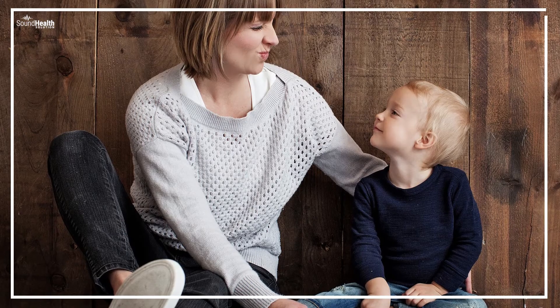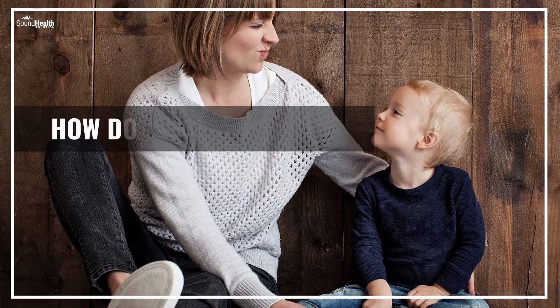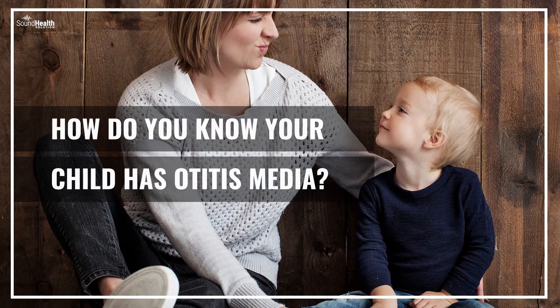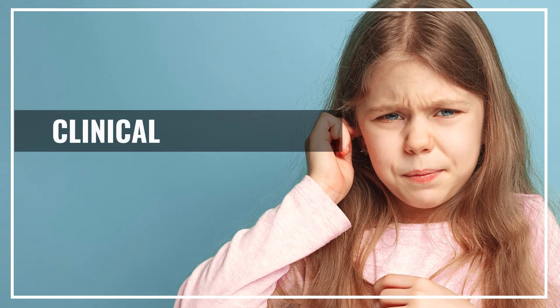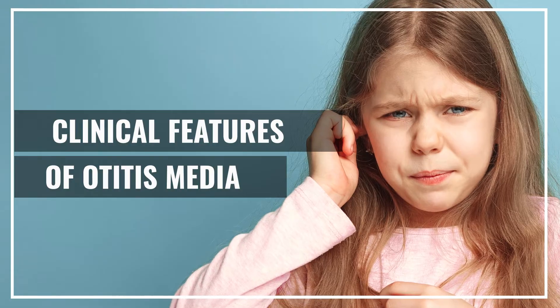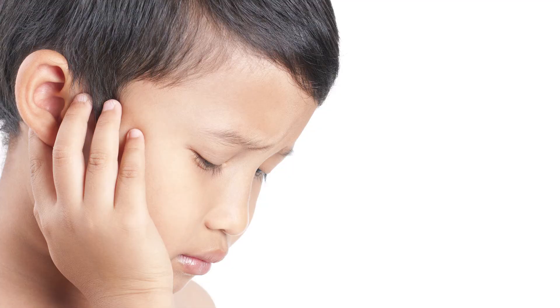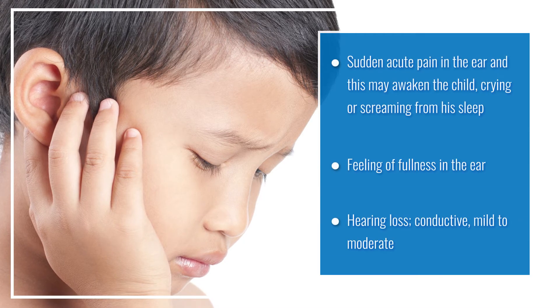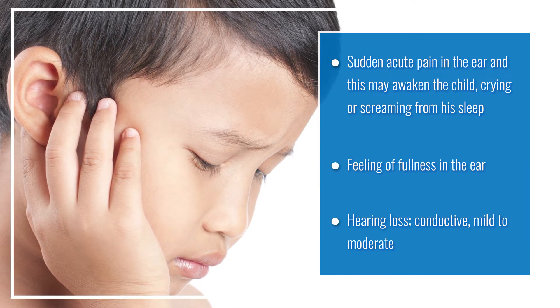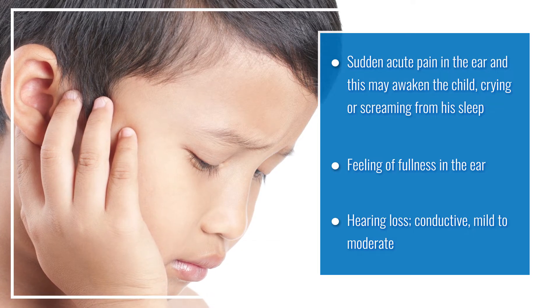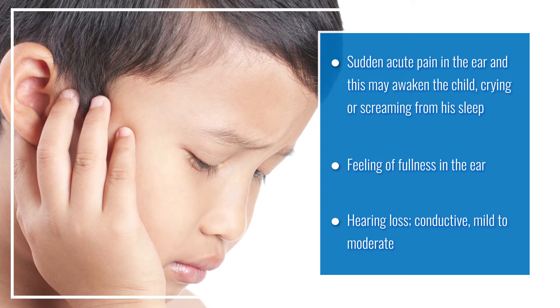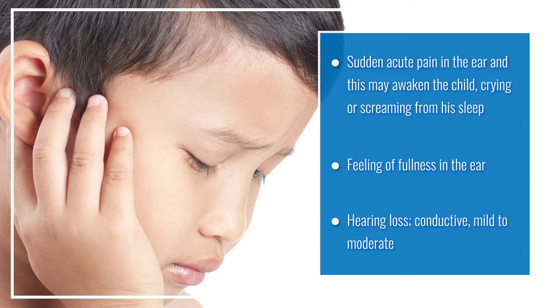But how do you know your child has otitis media? Let's move on now to some clinical features of otitis media. Sudden acute pain in the ear — this may awaken the child, crying or screaming from his sleep. Another feature includes feeling of fullness in the ear and hearing loss that could be conductive, mild to moderate.